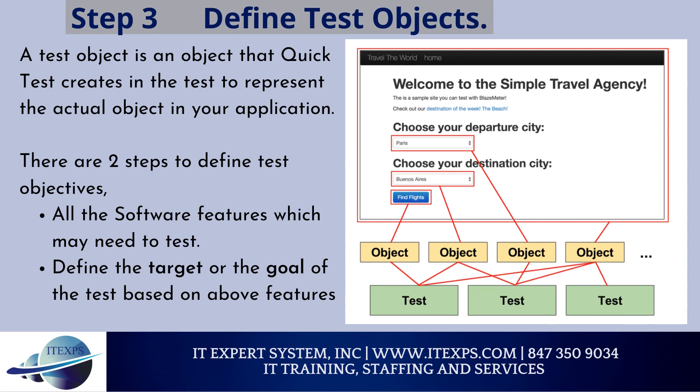Step 3: Define test objectives. A test object is an object that QuickTest creates in the test to represent the actual object in your application. There are two steps to define test objectives: list all the software features which may need to be tested, and define the target or goal of the test based on those features. The objective of testing is to find as many software defects as possible and ensure that the software is bug-free before release.